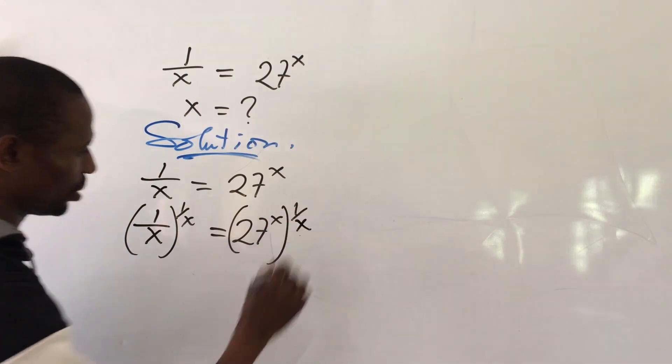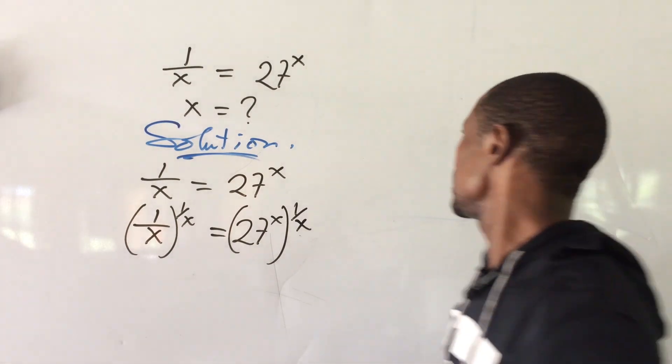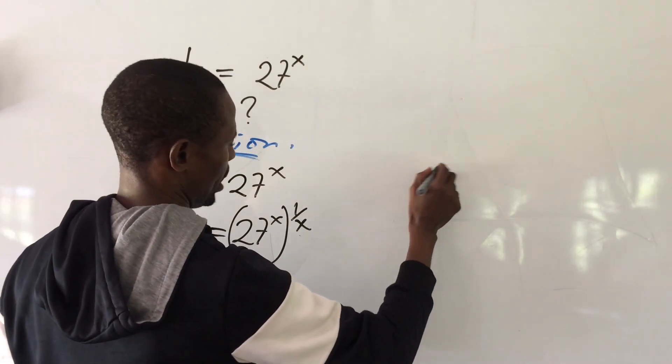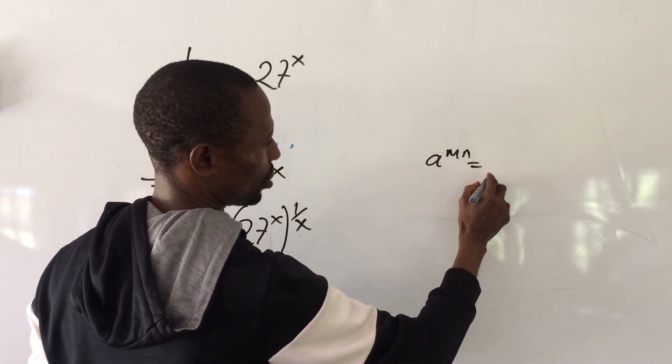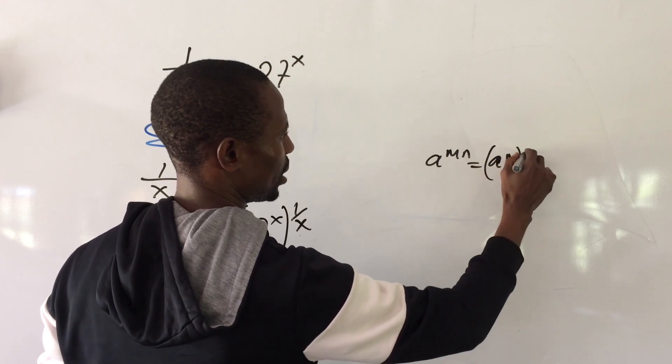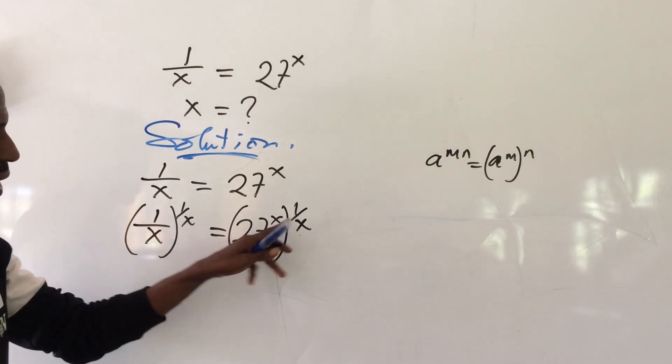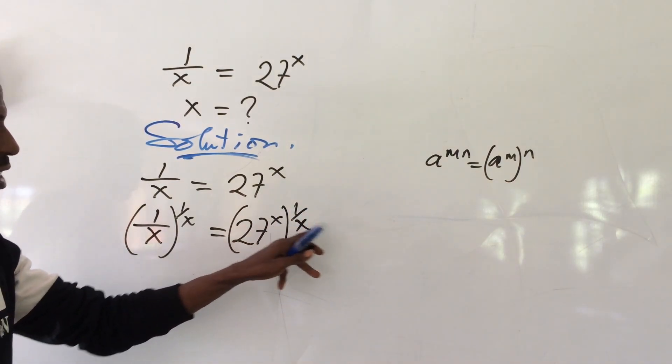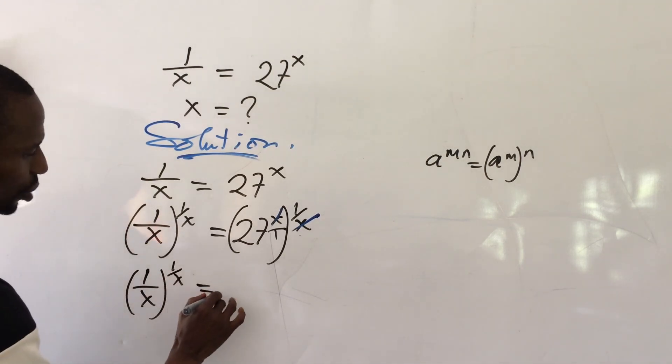Now according to the law of indices which says that if you have a to the power of m raised in bracket to the power of n, this is equal to a to the power of m times n. In other words we can multiply the powers. Now this is an exponent, this is an exponent, so if we multiply this by this, this x will go with this x here and so here we're left with 27. In other words we're going to have 1 all over x raised to the power of 1 all over x equal to 27.